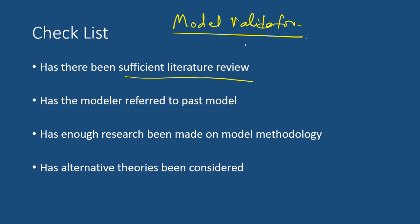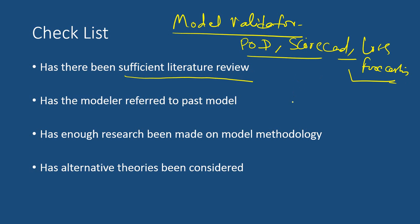For instance, if you are building a probability of default model, a POD model, an application scorecard model, or a loss forecasting model, there are a number of research publications already done by universities, professors, and other companies available in the public domain. The modeler should have done sufficient literature review in that particular topic, whether it is POD, scorecard, loss forecasting, or any other model. What is sufficient is subjective and depends on the company or regulators.